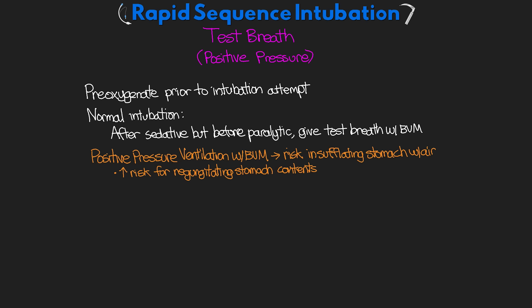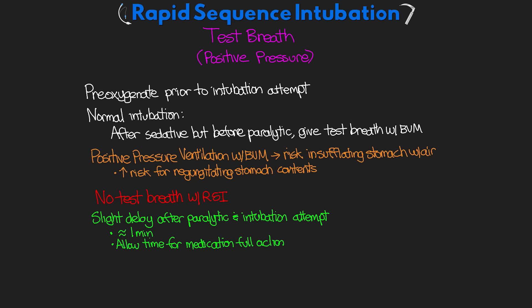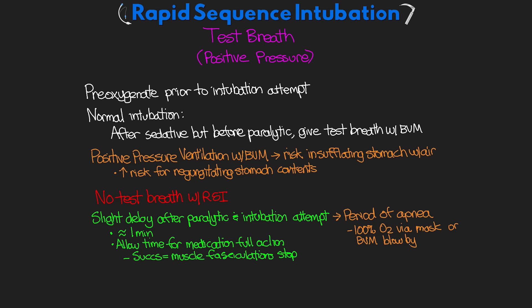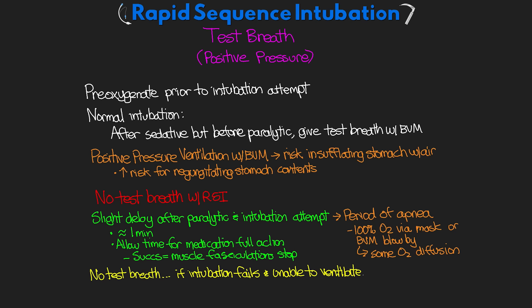However, positive pressure ventilation risks insufflating the stomach with air, which increases the risk for regurgitation of stomach contents. Therefore, our goal with RSI is to limit this risk, and we do not do any test breath. There will be a slight delay between administering the medications and the actual intubation attempt — typically about a minute after the paralytic is given — to allow enough time for the medication to have its full effect. With succinylcholine, we wait until the muscle fasciculations have stopped. Because of this, there will be a period of apnea. We continue to apply 100% oxygen via a mask or bag valve mask blow-by, allowing some diffusion of oxygen. If intubation fails and we cannot administer breaths, our patient is at risk for hypoxia and hypercapnia, and potentially more serious complications such as coding.